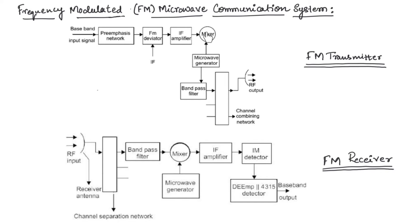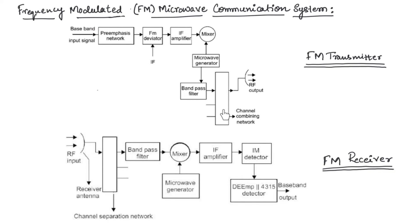The mixer circuit converts the IF signal into RF microwave frequencies. This circuit also preserves the modulation index and limits the bandwidth. The IF signal is converted into RF microwave signal using a microwave generator. The output of the mixer is passed through a band pass filter to band-limit the signal, and then the channel combination network separates the individual channels, and finally the signal is fed to the transmitter antenna. This is the working of the FM transmitter.